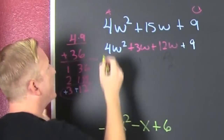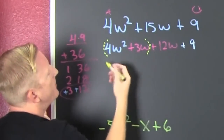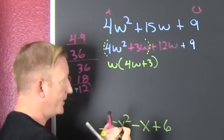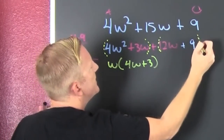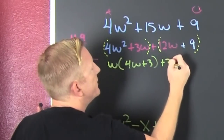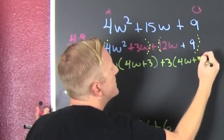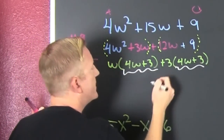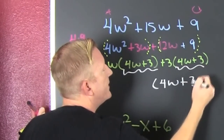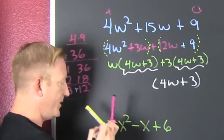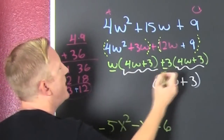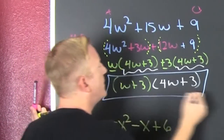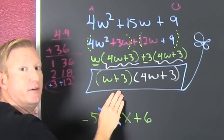Then we go and we factor by grouping. I take out the common factor — w — and then inside I have 4w plus 3. Then I factor out the common factor from the second group, which is a positive 3, and inside we have 4w plus 3. Now I can pull out that 4w plus 3. And the leftovers give me w plus 3. Box and flower — we have attained fully factored form.